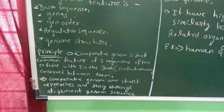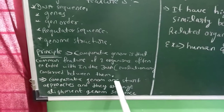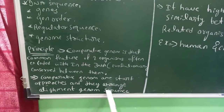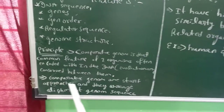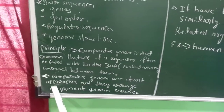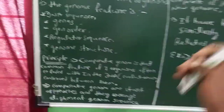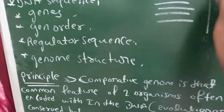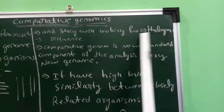Comparative genomics uses standard approaches where they arrange the element genome sequence. What is meant by element genome sequence? The genes will be arranged in a straight manner.